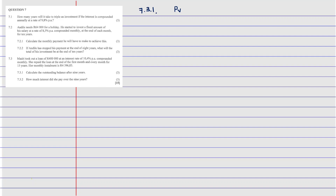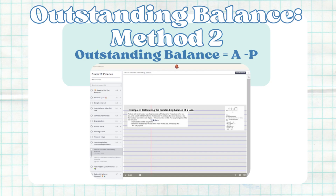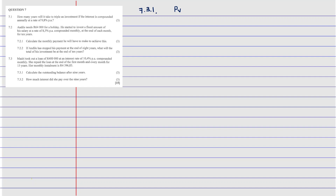For outstanding balance there are two methods. I'm going to use the present value formula method. The present value formula is: PV = x × [1 − (1 + i/m)^(−n×m)] / (i/m). Using this PV formula to find the outstanding balance after nine years.